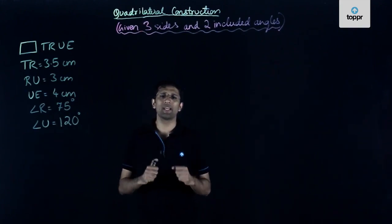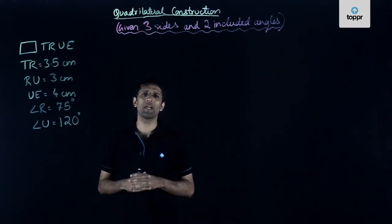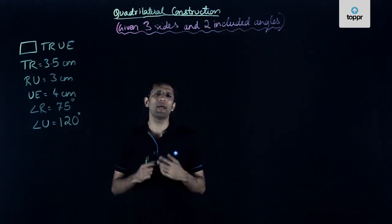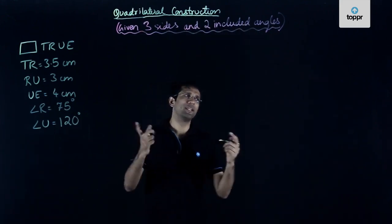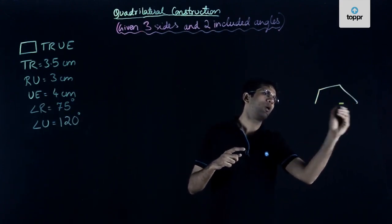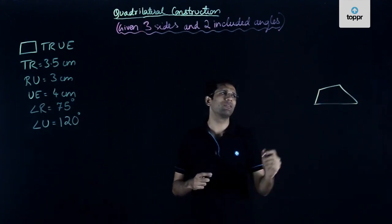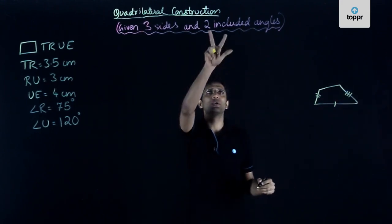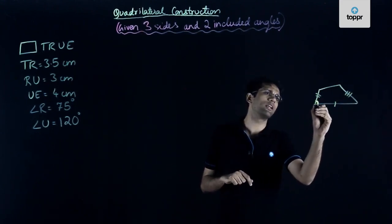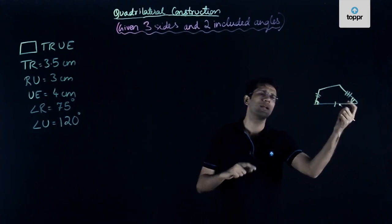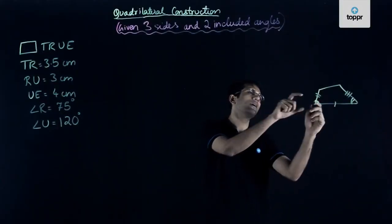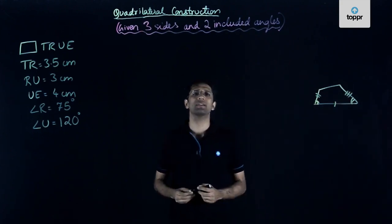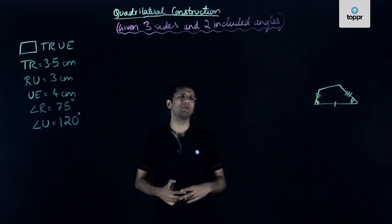Let us now see an example where we are asked to construct a quadrilateral when we have been given three sides and two included angles. The included angles are the angles included by the three given sides. For example, if these three sides are given, then these two angles between them are the included angles. Let us see one example based on this.